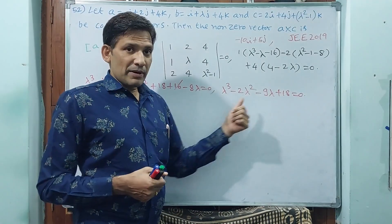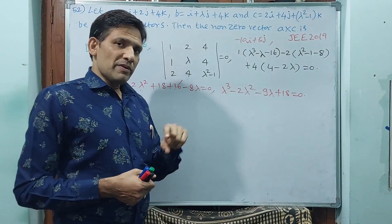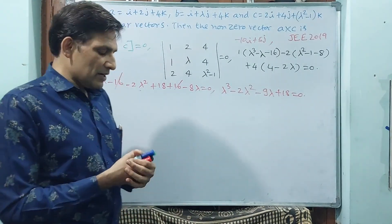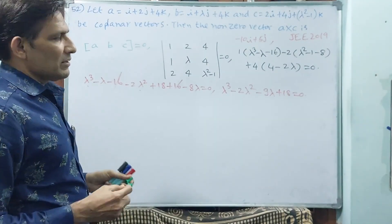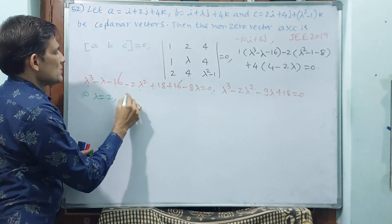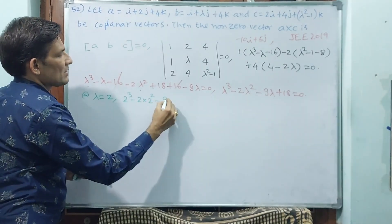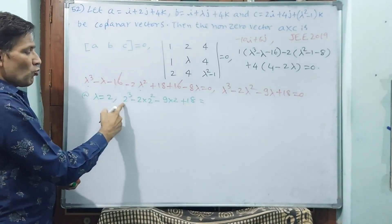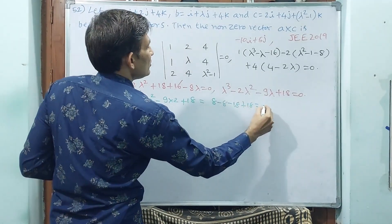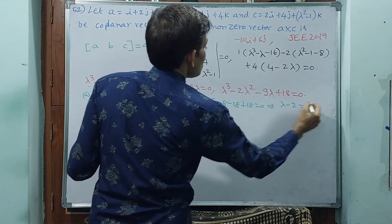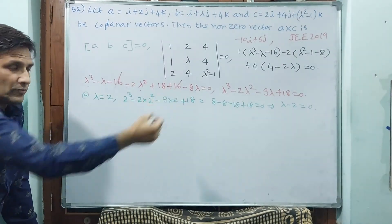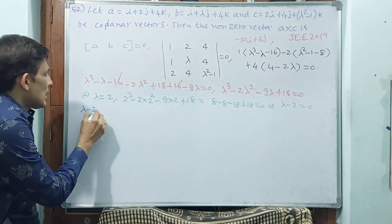By trial and error, testing values 0, 1, minus 1, minus 2, plus 2, minus 3, plus 3. I know the value is 2. At lambda equals 2: 2 cubed minus 2 into 2 squared minus 9 into 2 plus 18 equals 8 minus 8 minus 18 plus 18 equals 0. So lambda minus 2 is a factor.